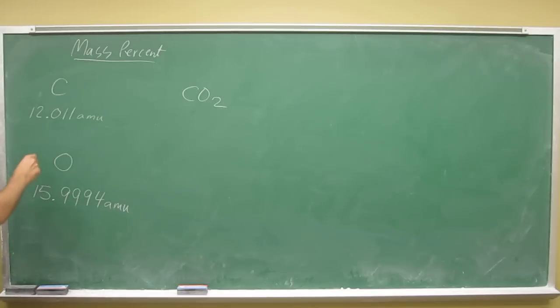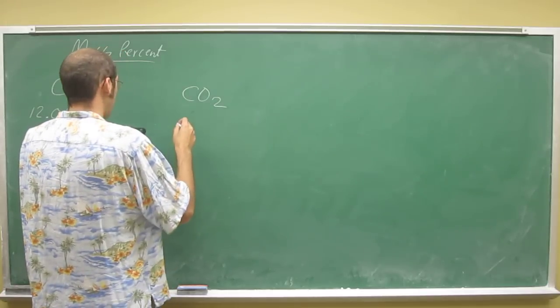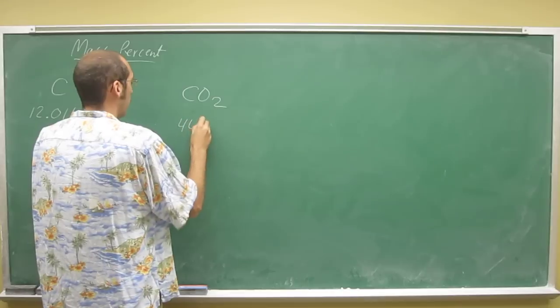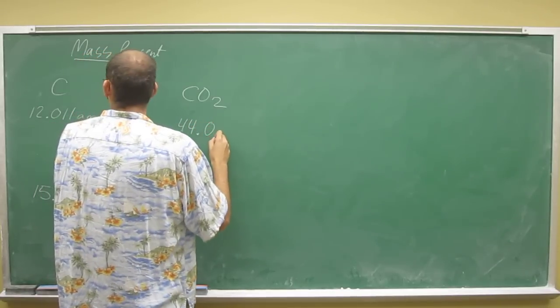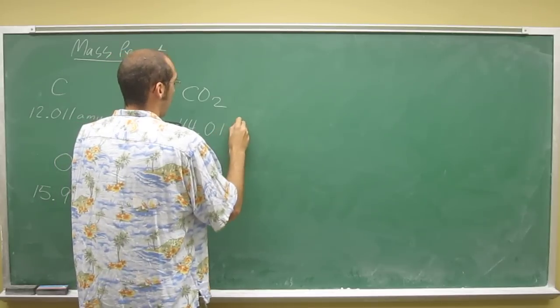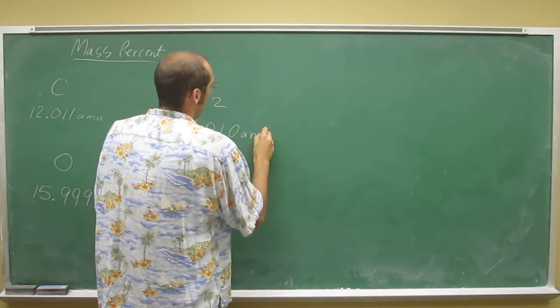You've got to remember there's two of those oxygens, right? So you're going to have to multiply this by two. Let's figure out what the molecular weight of carbon dioxide is. 15.9994 times 2 plus 12.011. So I get this number, 44.010 amu.